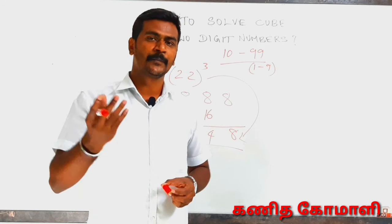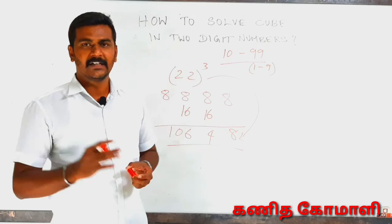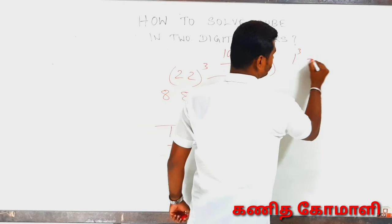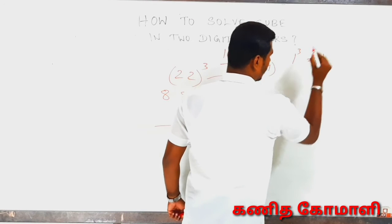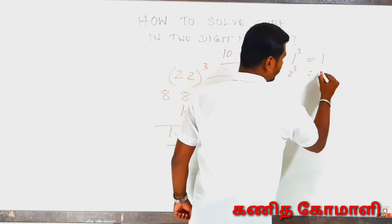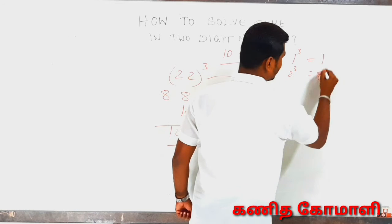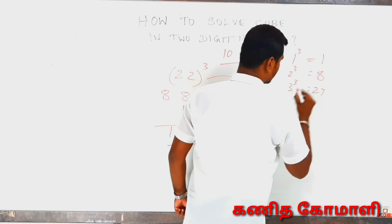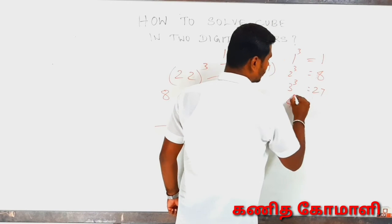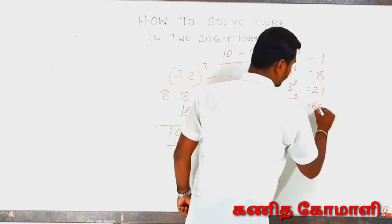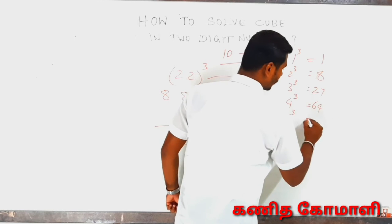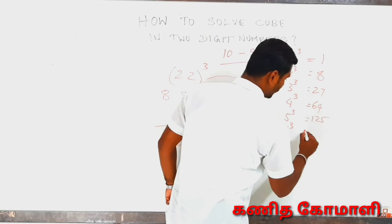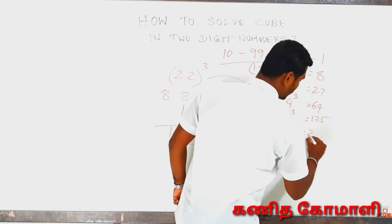What is 1 cube? 1. 2 cube? 8. 3 cube? 27. 4 cube? 64. 5 cube? 125. 6 cube? 216. 7 cube? 343.